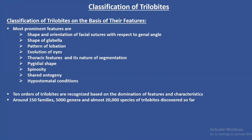Ten major orders of trilobites are recognized based on the dominance of their features and characters. Under these 10 major orders, around 150 families, 5,000 genera and almost about 20,000 species of trilobites have been discovered so far.